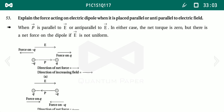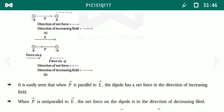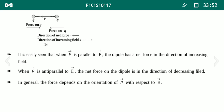When the dipole is placed parallel or anti-parallel to the electric field, forces on both charges are equal and opposite but their line of action is the same (collinear). So the resultant force is zero and torque is also zero — this is both linear and rotational equilibrium. When the dipole is at an angle, it is in linear equilibrium but not rotational equilibrium, causing rotation due to torque.